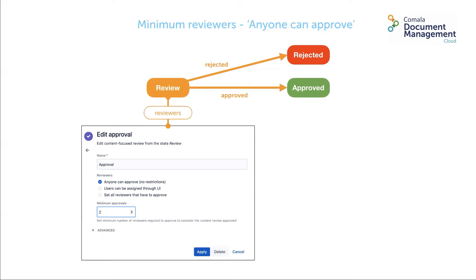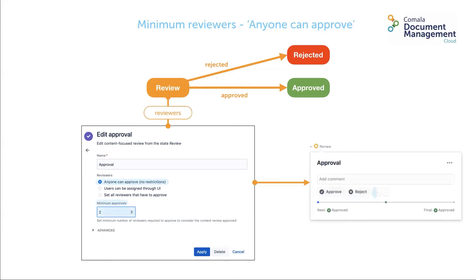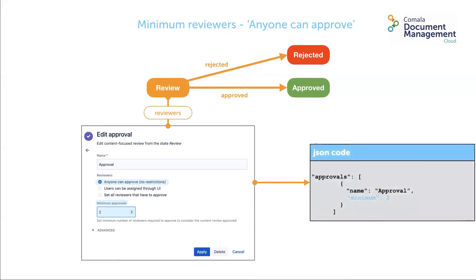If you set minimum reviewers for anyone can approve, it will simply add outline avatars for the number of reviewers required. Anyone can undertake the decision. Until the minimum number is reached and the approval transition occurs, existing users can change their decisions. In the JSON, the parameter minimum is added.